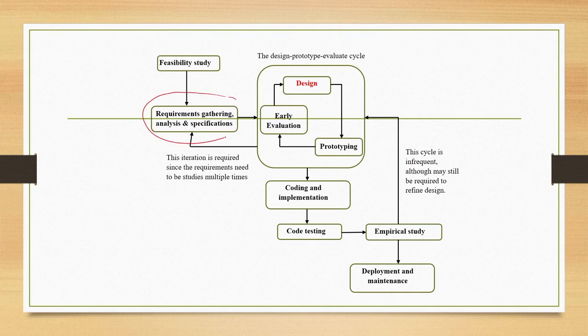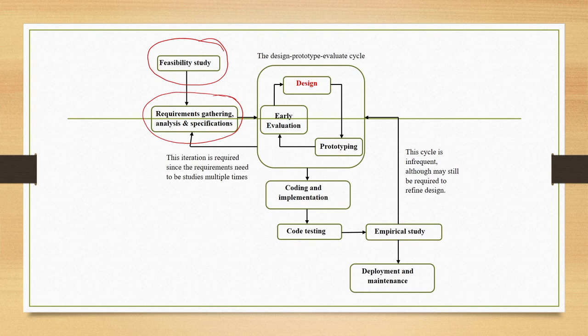We have several stages in the interactive system development life cycle. We start with the requirement gathering, analysis and specification stage. Feasibility study, although shown as part of the life cycle, is actually a stage where we decide whether to proceed or not, or if we proceed, whether any modification in the plan is required. As such, it is not directly involved in development of the system, so we will treat it separately and are not discussing it in detail in this course. We started our discussion with requirement gathering analysis and specification, which we considered as the first stage.